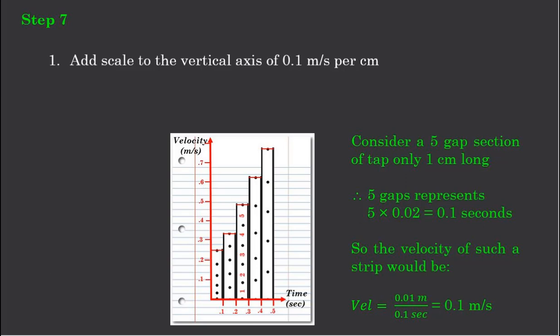So effectively, this section of paper 1 centimetre tall would represent 0.01 of a metre and the time would be 0.1 of a second. When I divide that 0.01 by 0.1, I end up with a velocity of 0.1 metre per second.